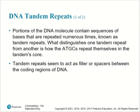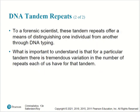Portions of the DNA molecule contain sequences of bases that are repeated numerous times, known as tandem repeats. What distinguishes one tandem repeat from another is how the ATGCs repeat themselves in the tandem core. Tandem repeats seem to act as filler or spacers between the coding regions of DNA — the coding regions being what is used to make proteins and genes. To a forensic scientist, these tandem repeats offer a means of distinguishing one individual from another through DNA typing. For a particular tandem, there is tremendous variation in the number of repeats each individual has.